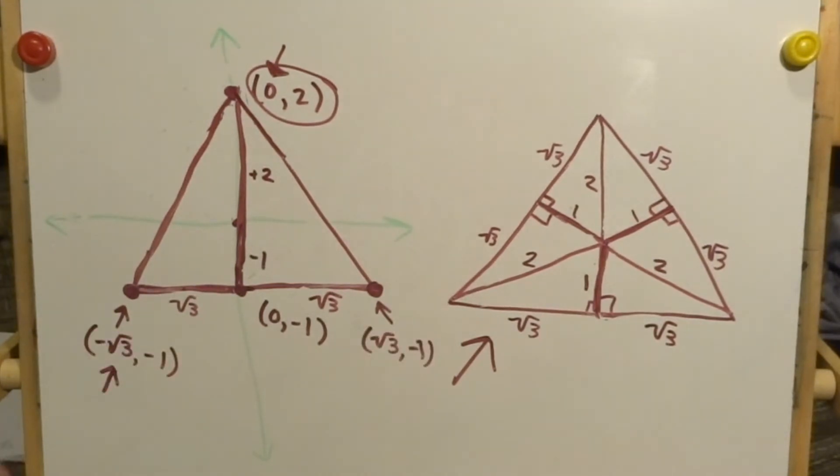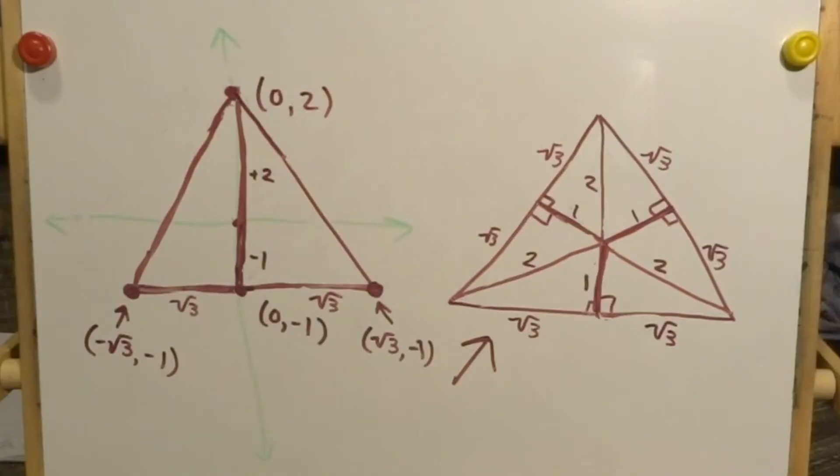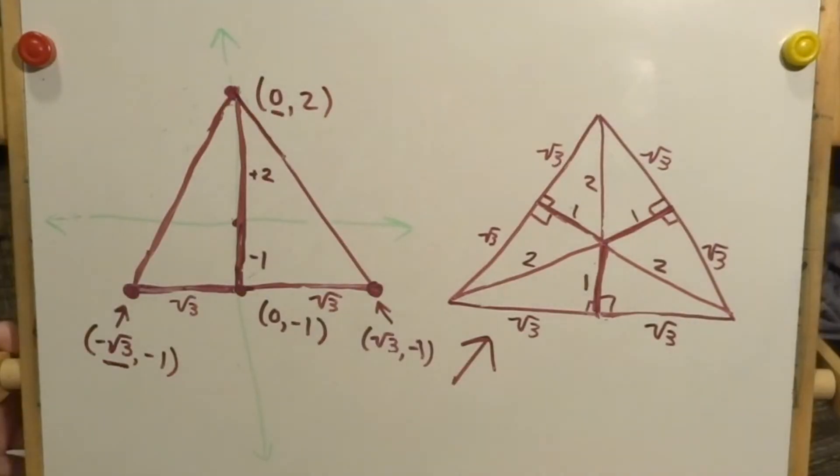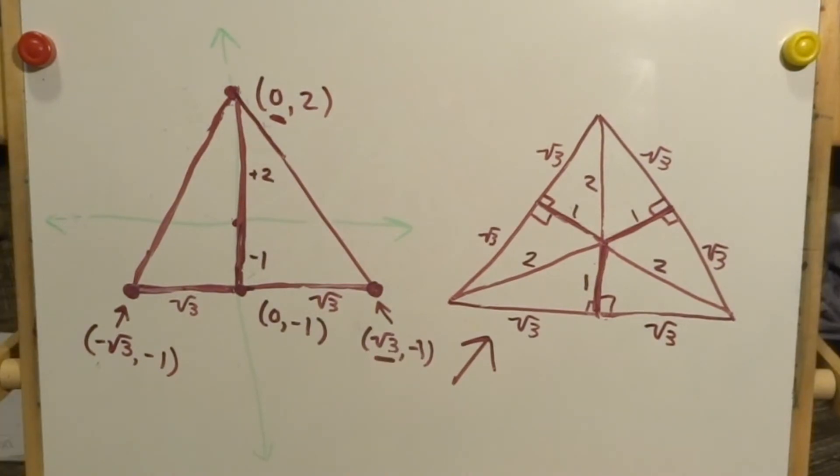So this one has an x-coordinate of negative root three, and this one has an x-coordinate of positive root three. So this bottom line has a range going from negative root three to positive root three. This line has a range from negative root three to zero. And this line has a range from zero to positive root three.